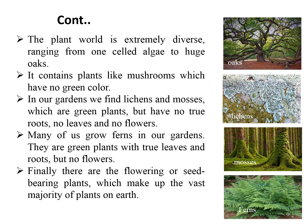The plant world is extremely diverse, ranging from one-celled algae to huge oak trees. It contains plant-like mushrooms which have no green color. In our gardens we find lichens and mosses. Lichen is the symbiotic partnership of two separate organisms — a fungus and an algae — which are green plants but have no true roots, no leaves, and no flowers. Many of us grow ferns in our gardens; they are green plants with true leaves and roots but no flowers. Finally, there are flowering or seed-bearing plants which make up the vast majority of plants on earth.